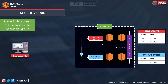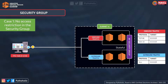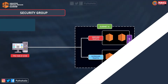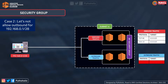When it comes to security groups, let's check case 1 where we have no access restrictions. For the inbound traffic, we have port 80 and 22 allowed for all IPv4 addresses. The same goes for outbound traffic where all traffic is allowed as well. So the instances in our subnet with the security group mySecurityGroup can be accessed with a free flow of request and response.